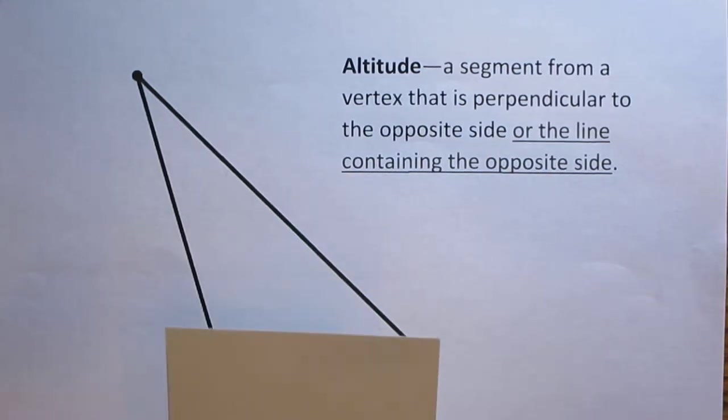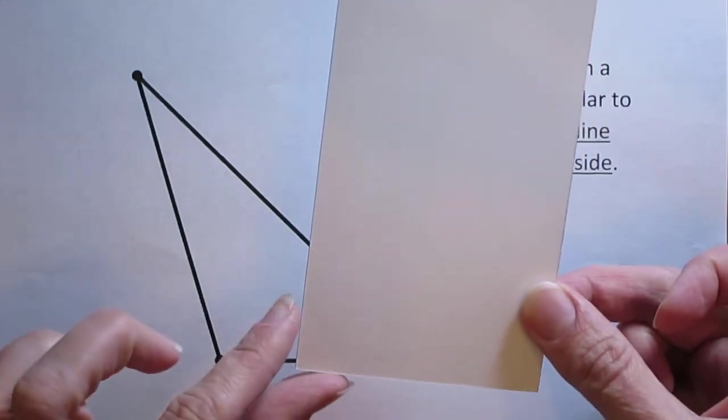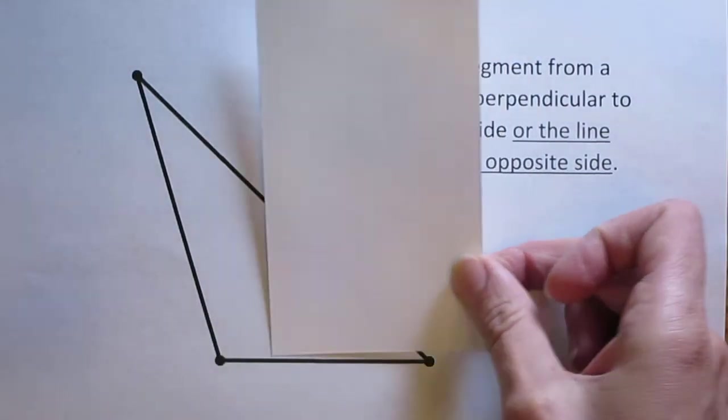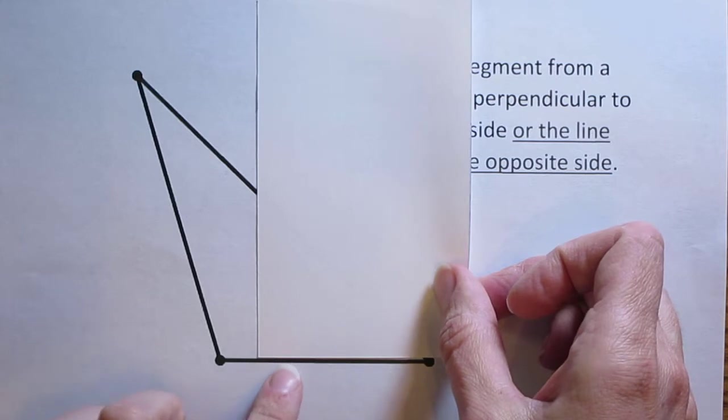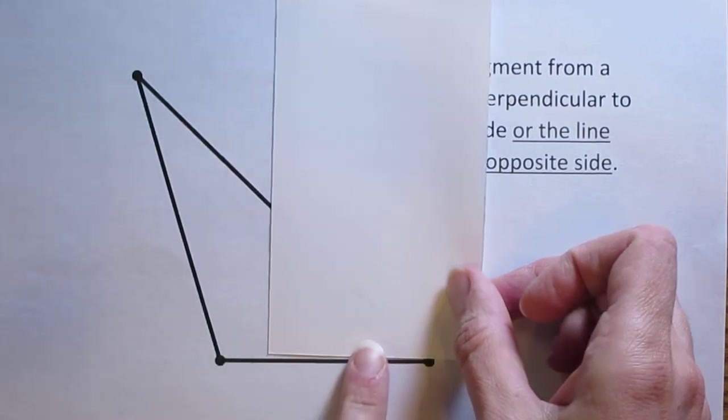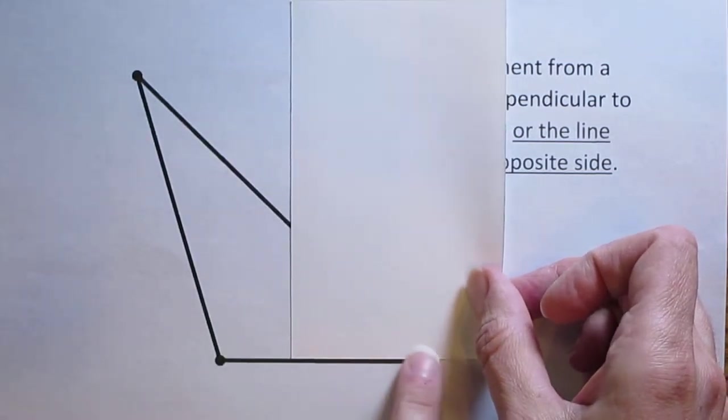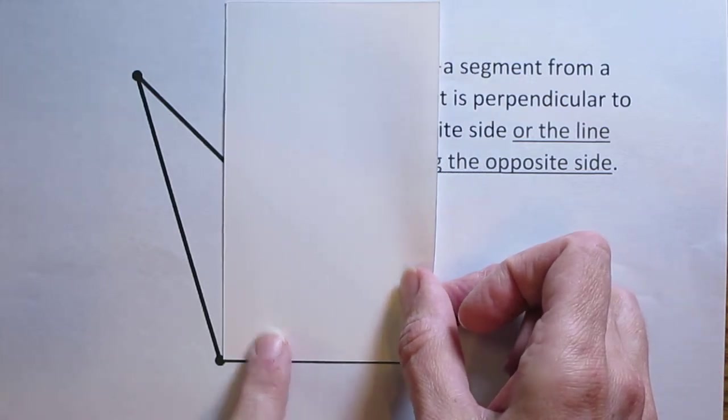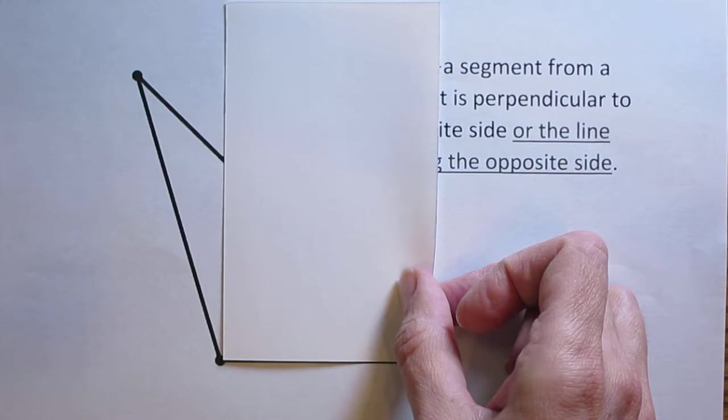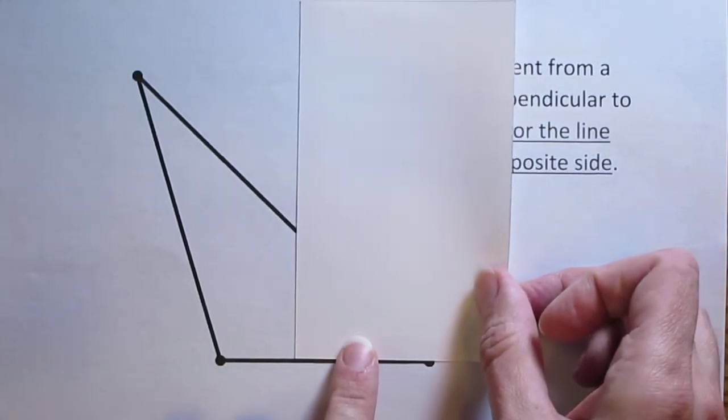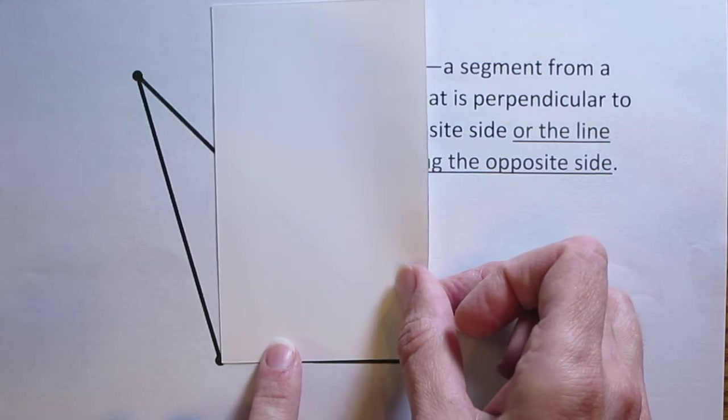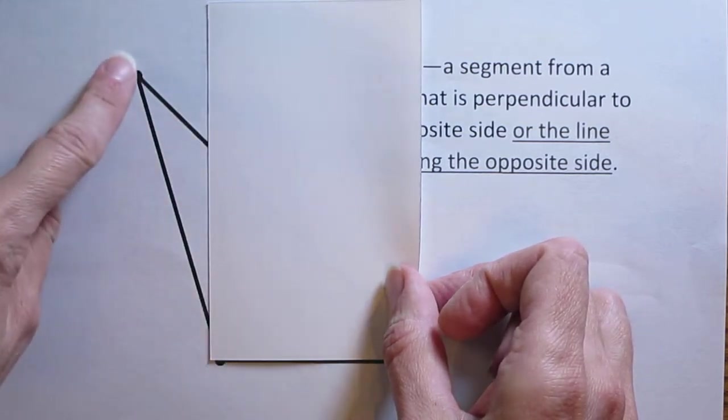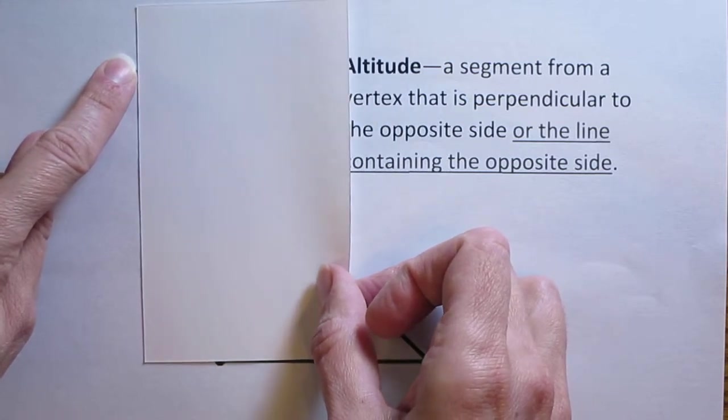In the other video I showed you that you could take a note card and using that right angle at the bottom of the note card you could create a perpendicular line. So we lined it up with the bottom of the triangle and slid it along that side until it lined up with the vertex opposite that side of the triangle. Now you'll notice as we go across here the note card doesn't line up with the vertex, it's still out here. We run out of triangle.